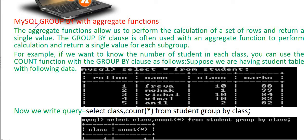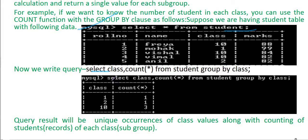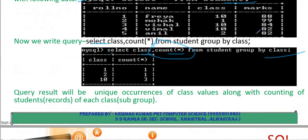GROUP BY with aggregate functions: the aggregate function allows us to perform calculation on a set of rows and return a single value. For example: SELECT class, COUNT(*) FROM student GROUP BY class — this counts the number of students in each class. The result shows the count of records for each class group.